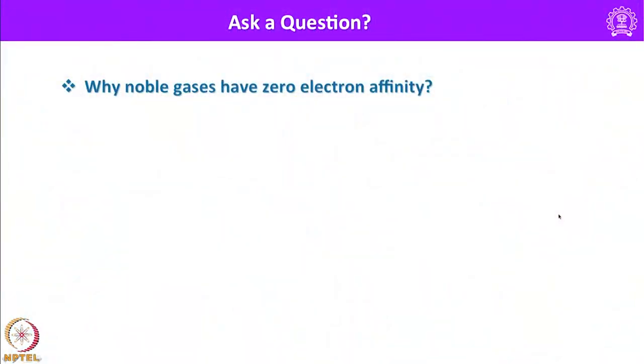Another interesting question: why do noble gases have zero electron affinity? This is because all noble gases have a completely filled valence shell — the s²p⁶ electronic configuration — and because of this all electrons are held firmly by the nucleus. It is very difficult to ionize them to generate cationic species, and since noble gases do not have any vacant orbital in their valence shell and already have the completed s²p⁶ configuration, they have no tendency to add another electron. As a result, noble gases have zero electron affinity.